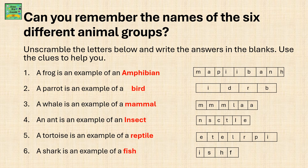Can you remember the names of the six different animal groups? Unscramble the letters below and write the correct answers in the blanks. Use the clues to help you. The first question: a frog is an example of an? The scrambled letters can be unscrambled and the word formed is amphibian.